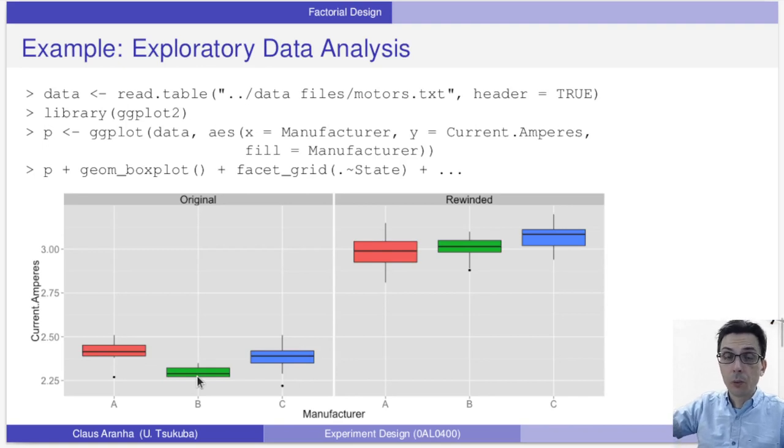Now the first thing that we want to do when we're working with a multi-factor experiment is to look at the data. So here we are plotting box plots from manufacturer A, B, C for the original and from manufacturer A, B, C for the rewinded. We can see right away that there is a large effect, a large main effect for the original rewinded factor. Now for the manufacturer, there seems to be an effect there, but the effect is not very big. It's there, and we can see also that the effect is different for the original rewind. So there's a little bit of an interaction effect for manufacturer A and the original rewinded factor. For the manufacturer B and C, it's not very clear if we have an interaction effect or not.